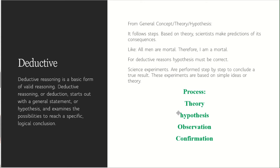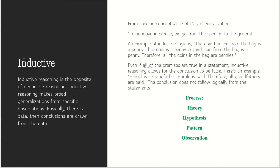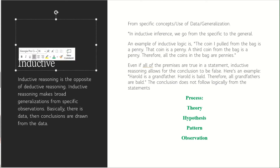In the scientific method you follow: simple theory → hypothesis → observation → confirmation, where the confirmation is the conclusion and it should be true. This theory, which starts from a general concept, changes into a logical conclusion. This is called deductive reasoning — a simple idea converts step by step into a complex, true, and logical conclusion.